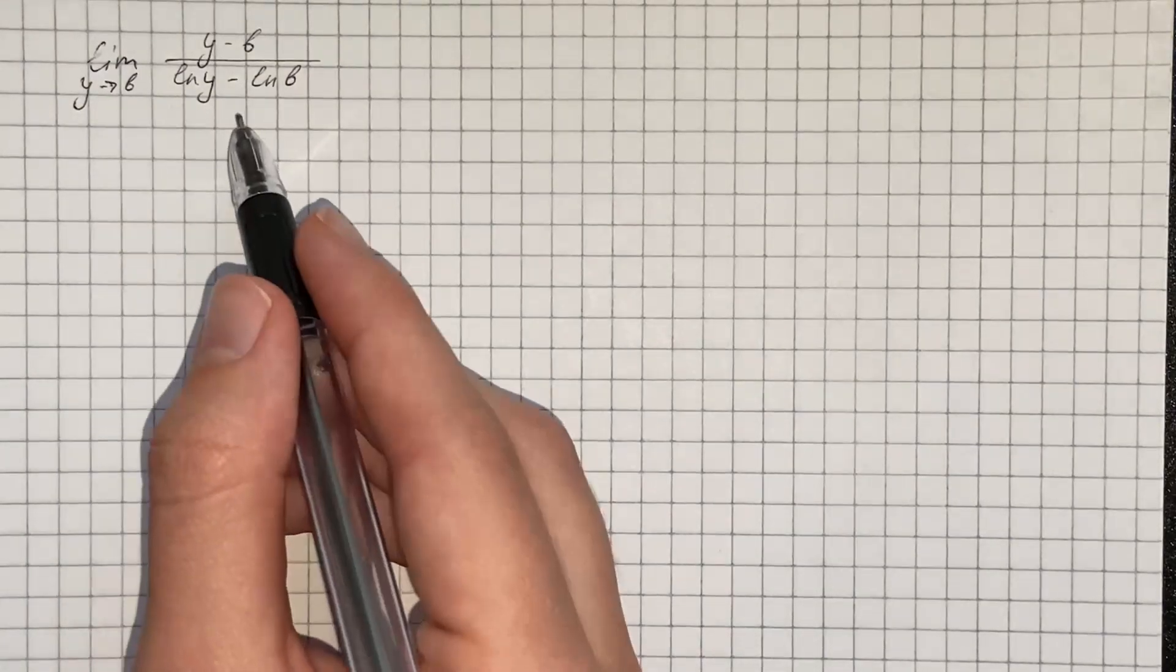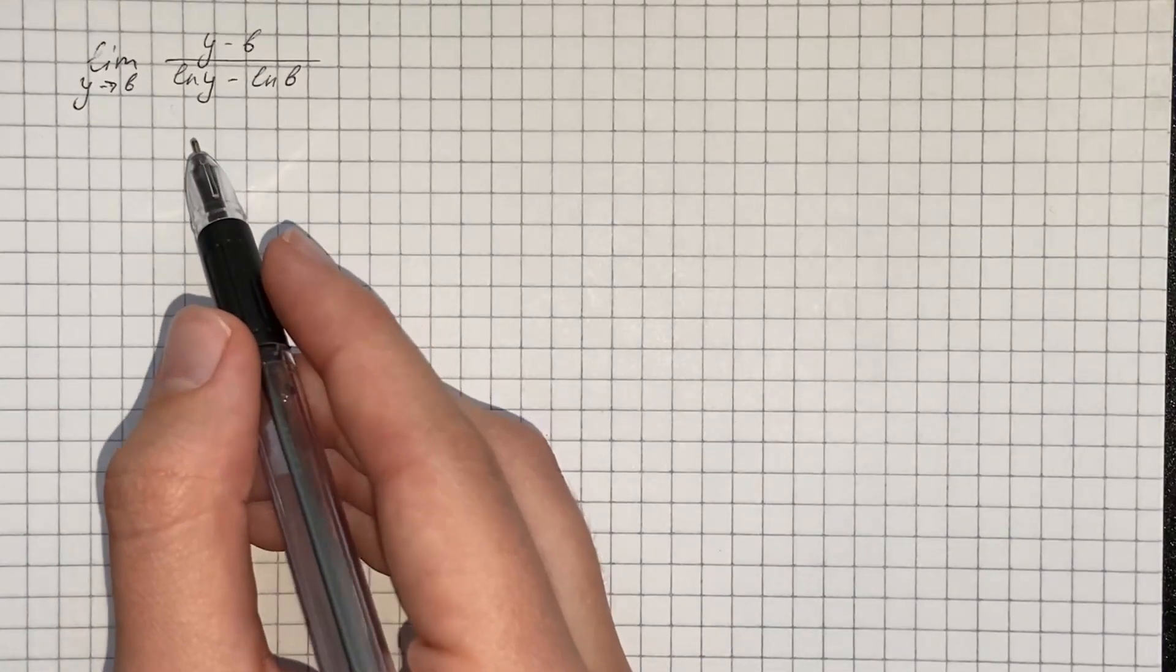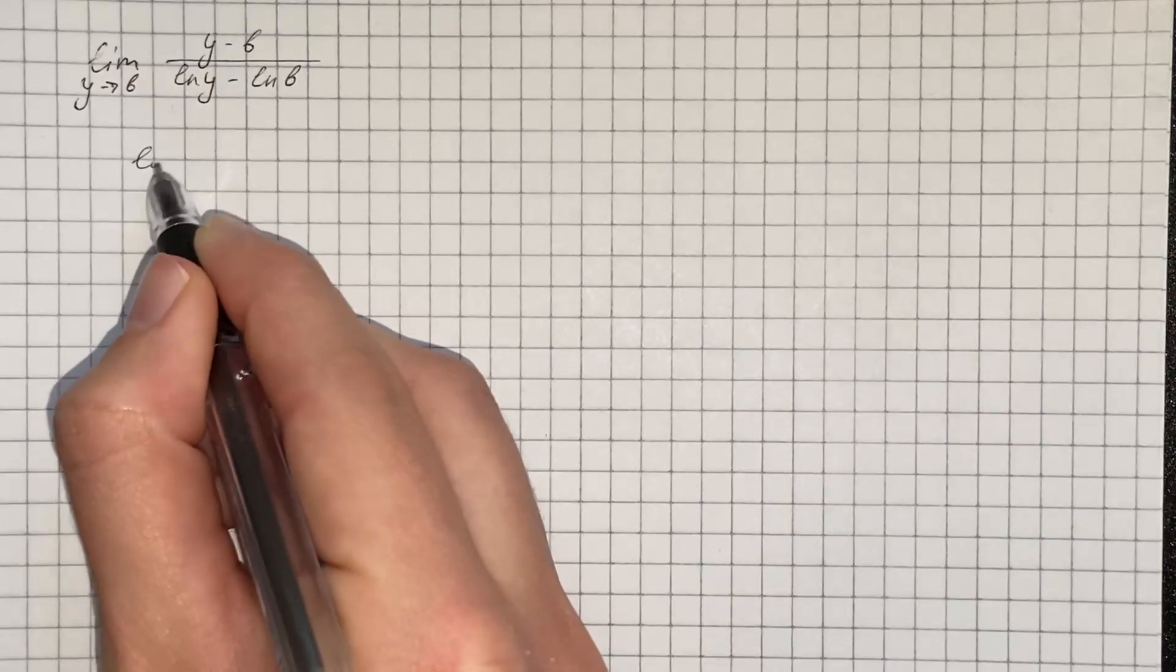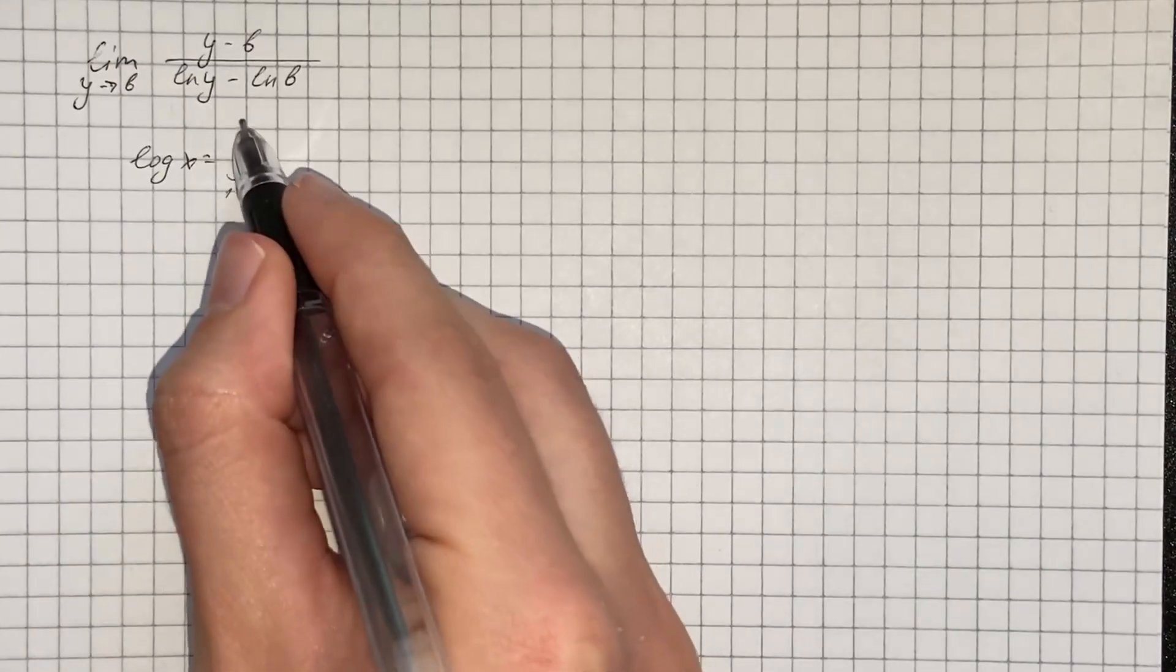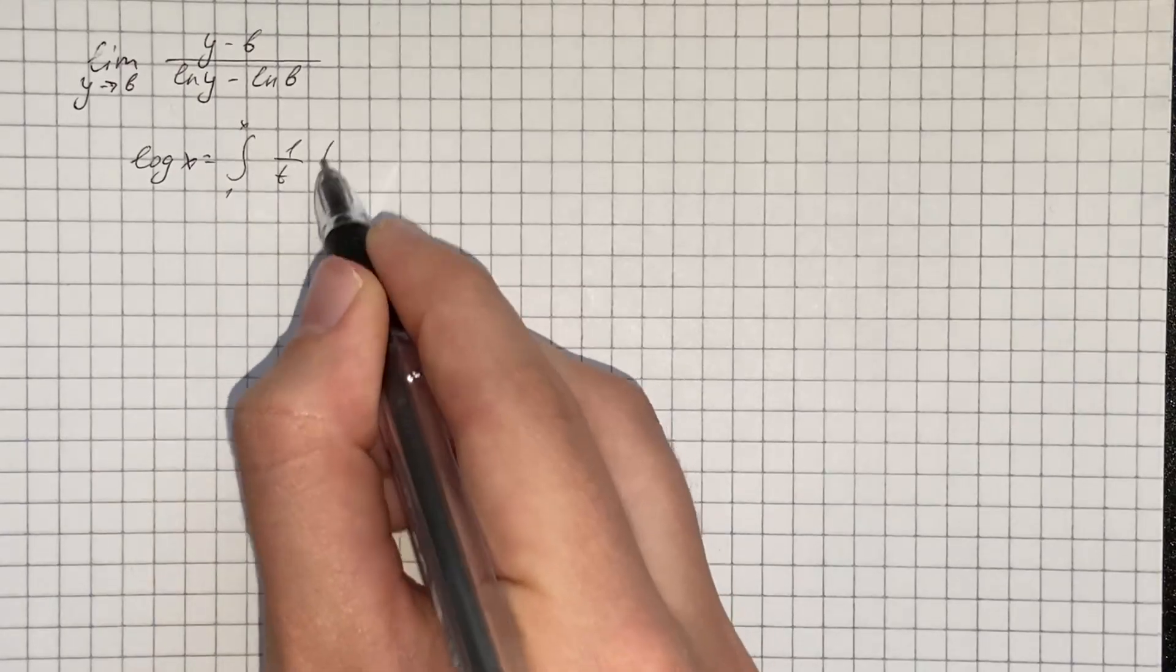We have to relate the Cauchy limit, and first we're going to look at the definition of the log of x, which goes integral from 1 to x of 1 over t dt.